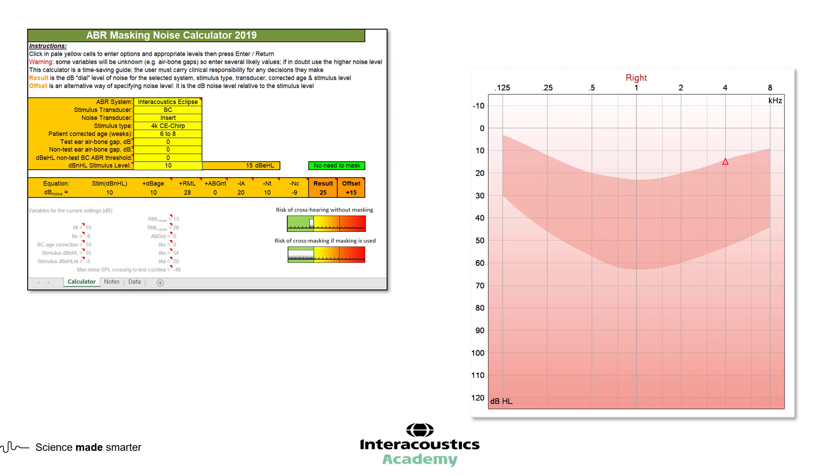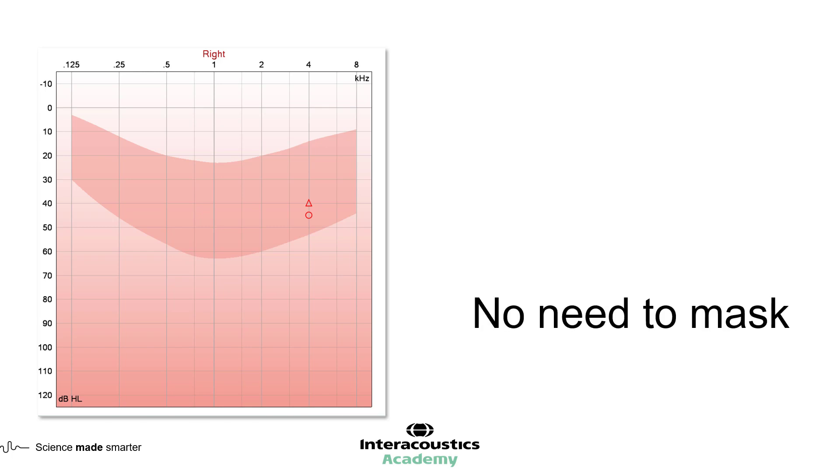If you establish a bone conduction response within the normal range of hearing, which does not require masking, there is no need to measure at quieter levels in order to establish exact thresholds. If the not masked bone conduction is suggesting a sensorineural loss, where it is the same as the air conduction, then masking is also not required in this situation, and you can progress with your testing.